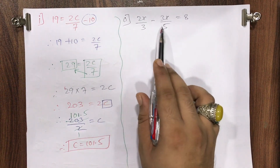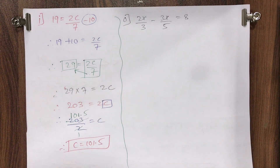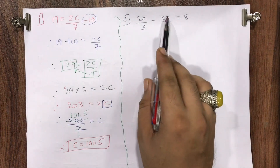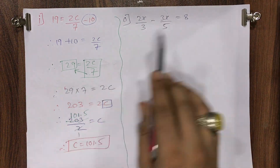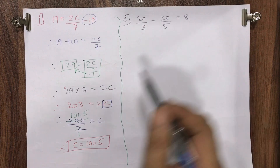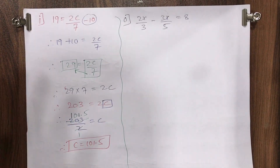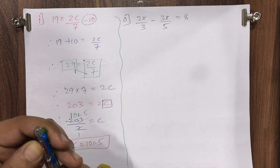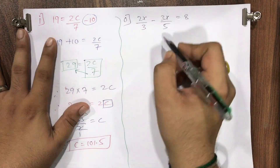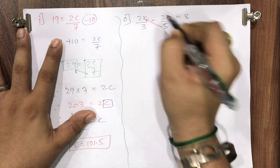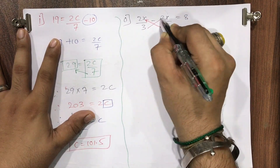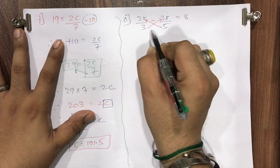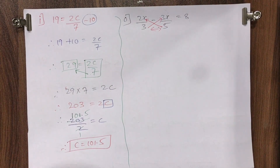Next sub-question o: 2x/3 − 3x/5 = 8. This 5 will not directly multiply with 8, and neither will 3, because we have two terms on the left hand side. To solve this, we take the LCM of the denominators. We multiply: 5 × 2x for the first term and 3 × 3x for the second term, with denominator 5 × 3 = 15.